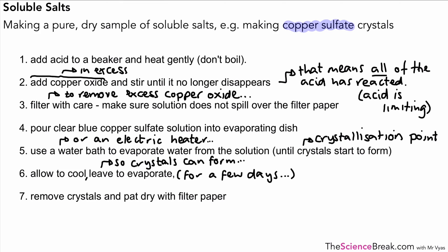Once we have left it for a few days, we can remove the crystals with a spatula and we can pat it dry with some filter paper. So then we have our pure, dry copper sulfate crystals. In this example, it's copper sulfate. But remember, it depends on the acid you use and the insoluble substance you use. That determines the crystals that you're going to get at the end.